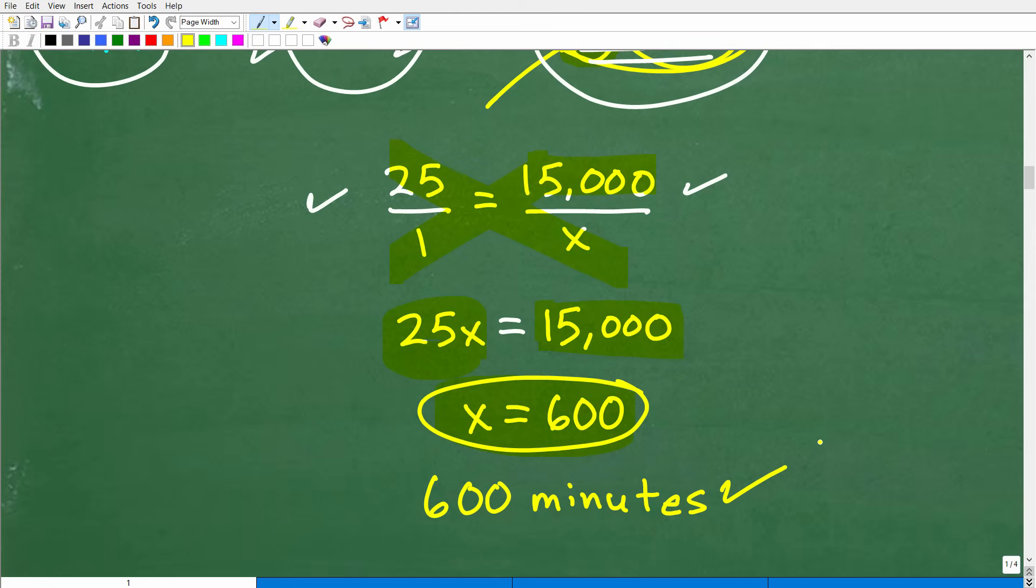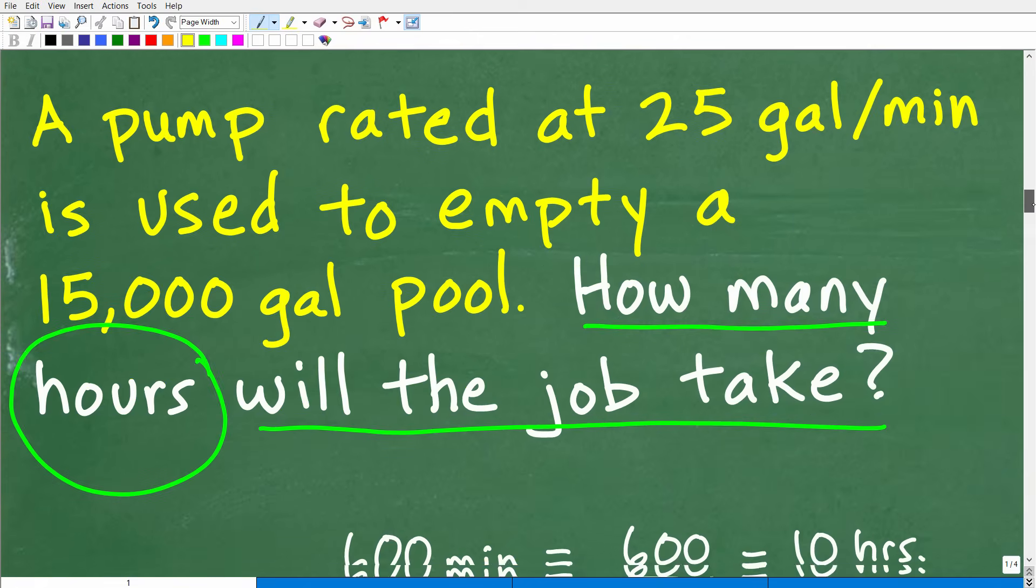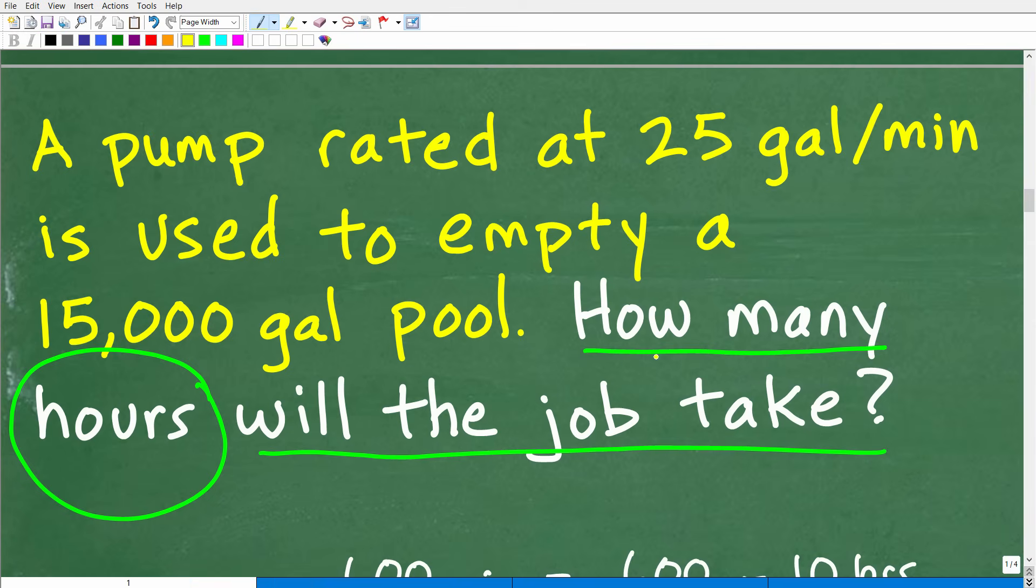So we just solved the answer at 600 minutes. Now, if some of you were just in a rush, and a lot of students will do this, they'll be all happy. They'll be like, look at me. I can do proportions. And they'll write 600 down as their answer. Sometimes they'll just write 600. Sometimes they'll write 600 minutes. But what was the question? Let's look at the question one more time. The question says, how many hours? Hours, not minutes.